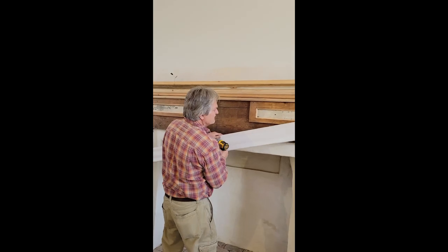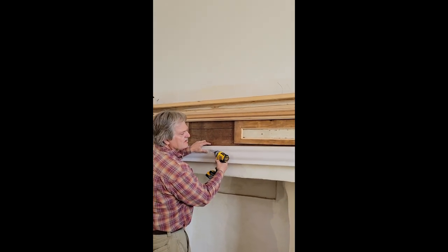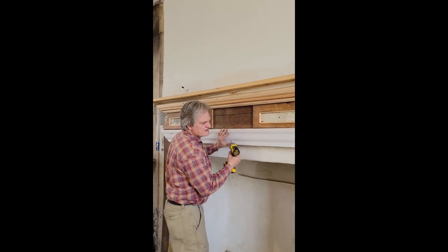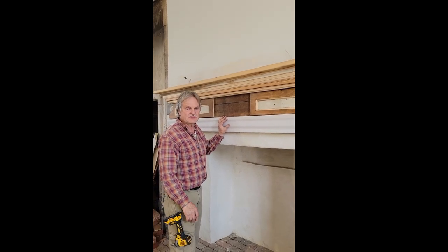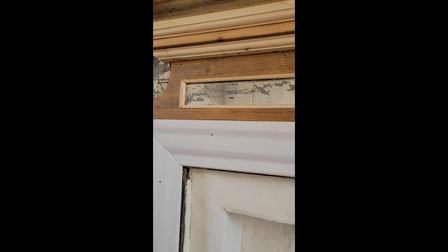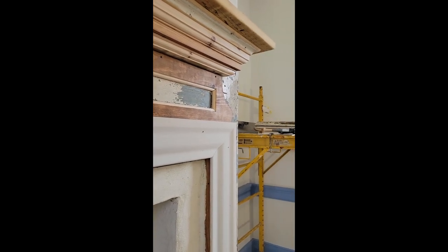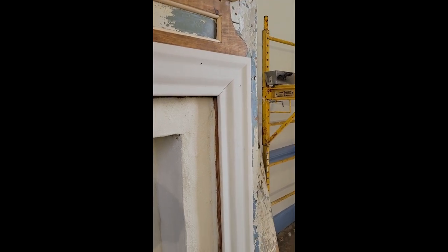We had this made out of poplar and it follows the lines exactly what was there. We're going to put this up on the top and on the sides as the ghost lines had designated. This shows the finished casing around the opening of the hearth.